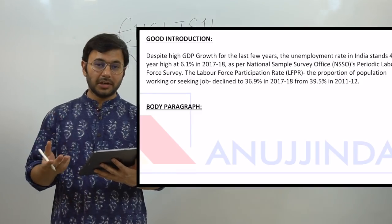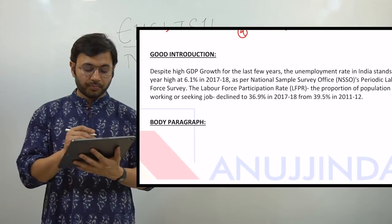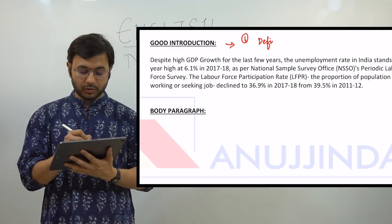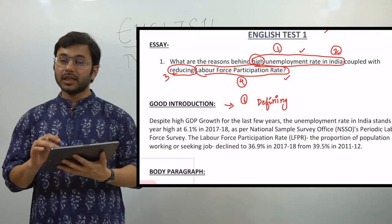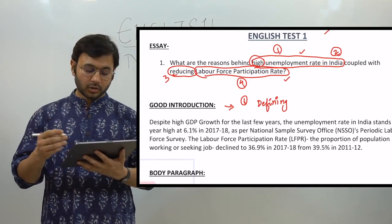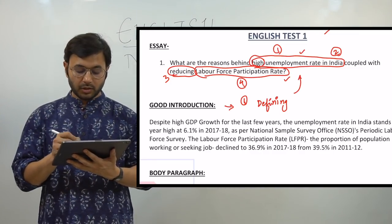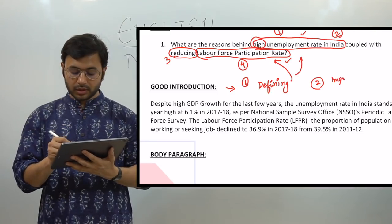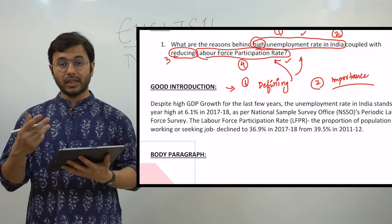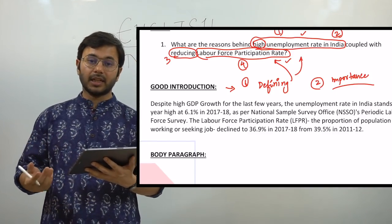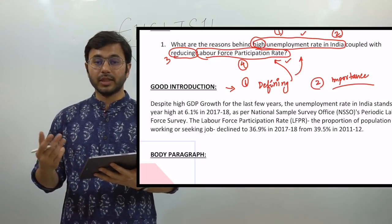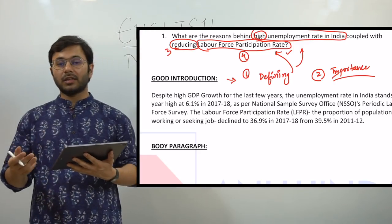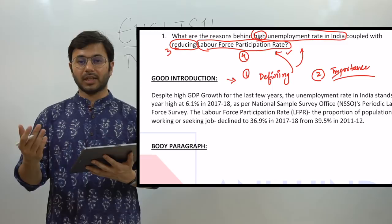This introduction proves the statement that unemployment is going up and LFPR is going down — that's why I like it: short, crisp, and it solves the purpose. There are two important things when writing an introduction: first, define the terms or keywords you have identified, such as what is unemployment and what is labor force participation rate. Second, mention the importance of the entire topic so that the flow and connection between the introduction and body paragraph is created.